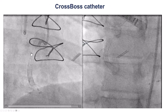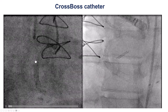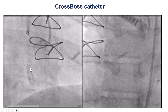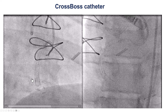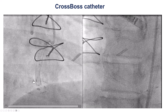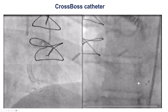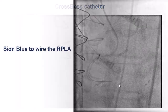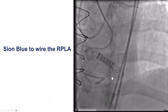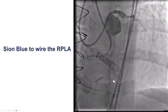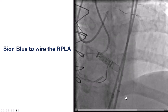In this case, we did use a CrossBoss catheter, which is something we don't routinely do. However, it can shorten the time it takes to cross in CTO. And sure enough, fairly quickly, the CrossBoss successfully crossed all the way into the distal true lumen, as confirmed by contralateral injection.